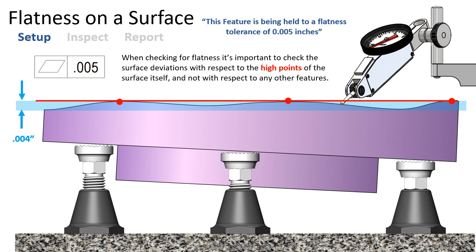We can level the surface to its own three high points regardless of where the machinist jacks are, and then any deviation lower than those three high points is our true flatness error. This value is very tedious to manually collect with a height gauge, but this is the only way we would be able to reject the part. If we've leveled the three high points and the lowest point with respect to the plane created from those three high points is further away than five thousandths, we can now reject this part.